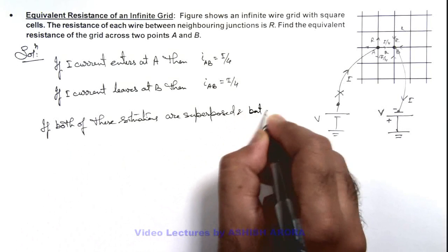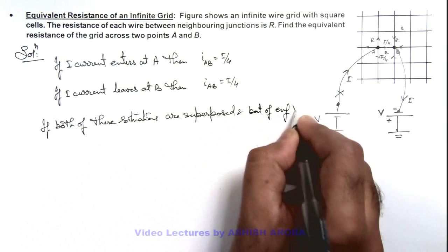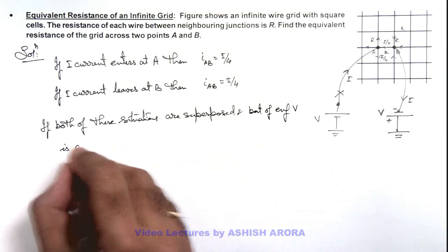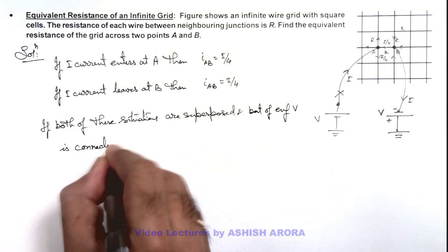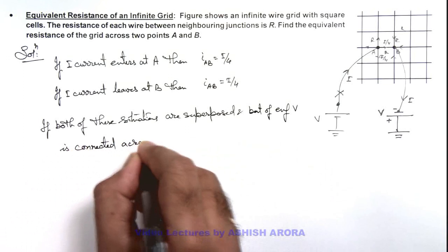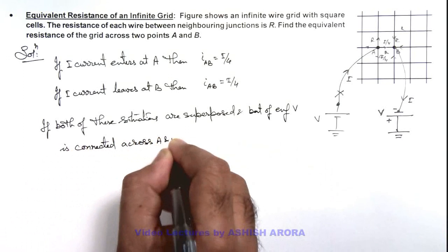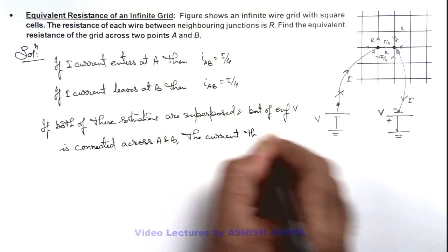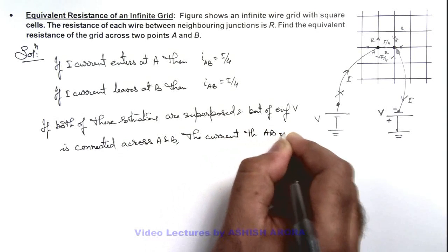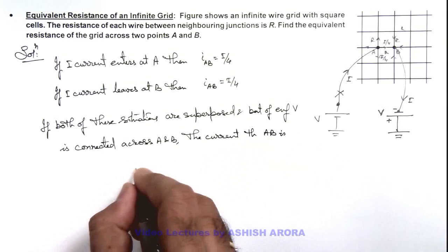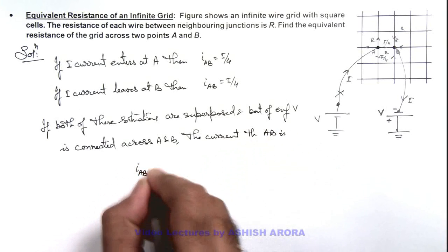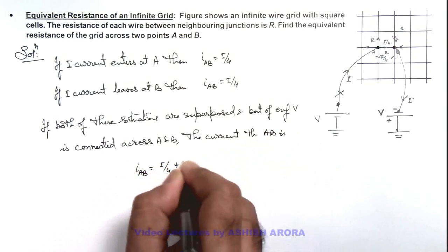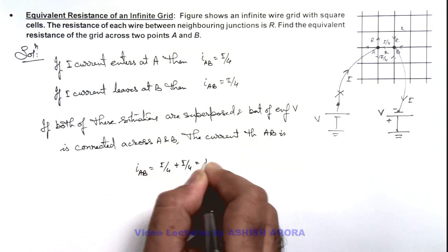Say if both the situations are superposed and a battery of EMF V is connected across A and B, the current through wire AB is, in this situation the current through wire AB will be I by 4 plus I by 4, that is equal to I by 2.